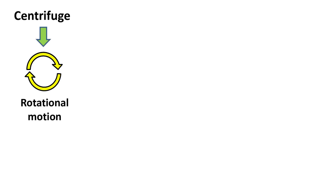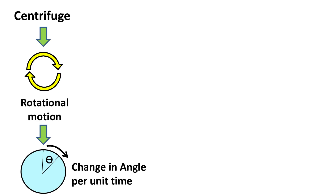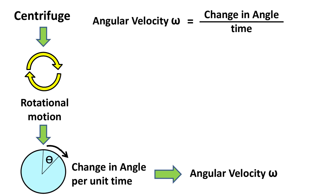Now let's talk about centrifuge. The rotor in a centrifuge undergoes rotational motion. When an object rotates, there is a change in angle with respect to time. The change in angle per unit time is termed as angular velocity. Angular velocity is denoted as omega, and it is expressed as omega equals theta divided by t, where theta is the angle and t is the time.